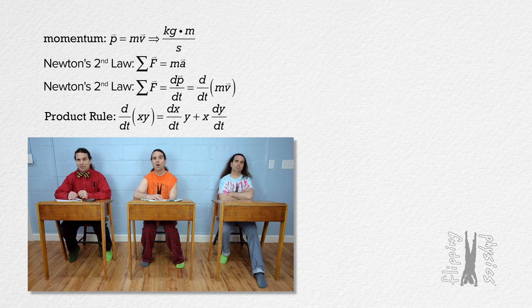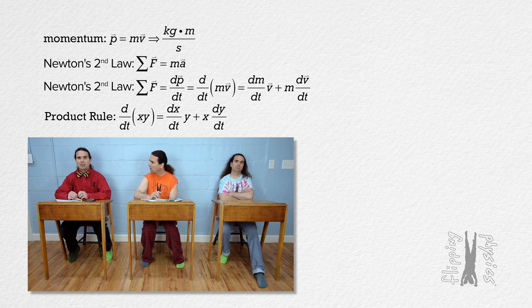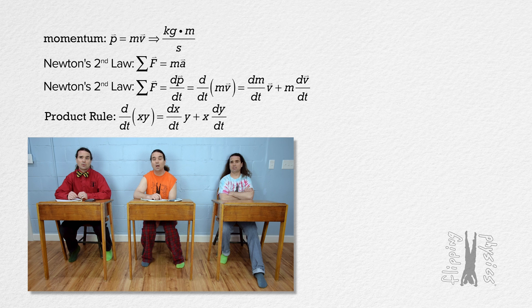So, the derivative of mass times velocity with respect to time equals the derivative of mass with respect to time times velocity plus mass times the derivative of velocity with respect to time. And the derivative of velocity with respect to time equals acceleration.